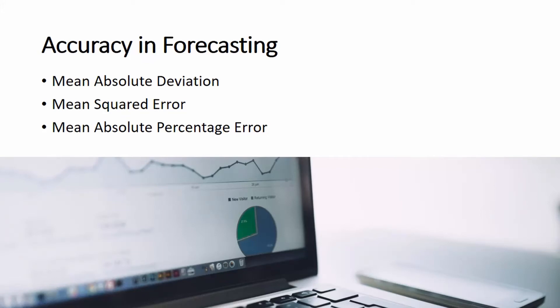Let us learn how to determine the accuracy of our forecast. To determine forecast accuracy, we can use three methods: mean absolute deviation, mean squared error, and mean absolute percentage error.